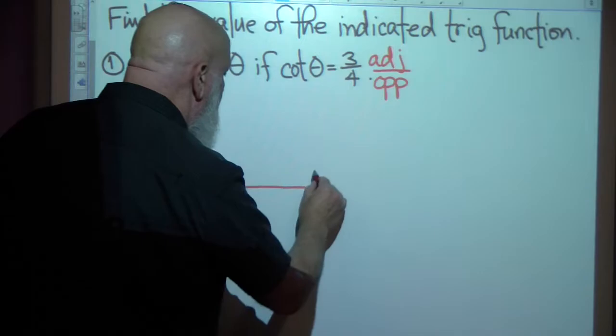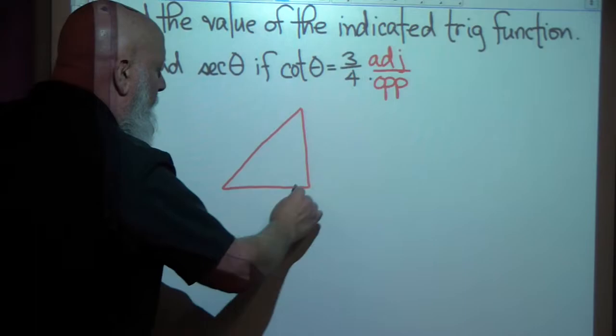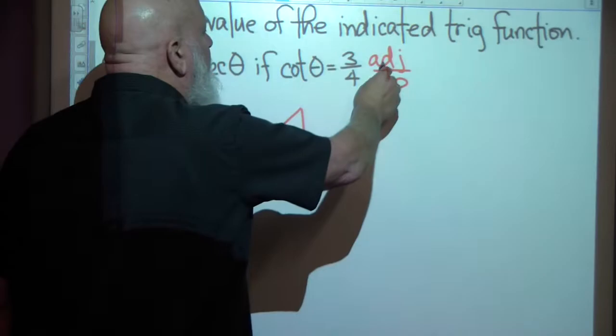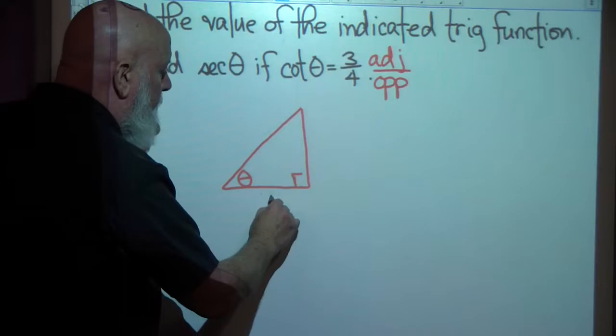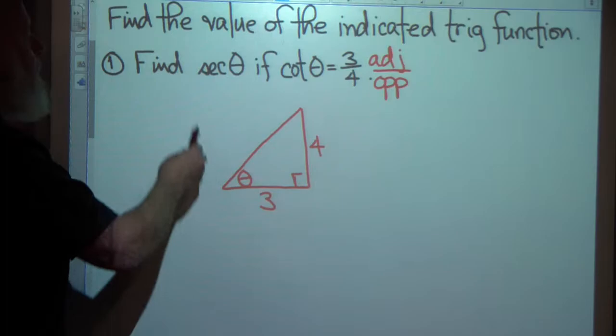I'm going to draw a right triangle. I'm not going to pay any attention to scale because the scale doesn't matter. I'm going to put my theta right here, and I'm going to say adjacent over opposite. Adjacent is right here — if I put my angle right here, adjacent would be 3. Opposite would be 4. And now I'm in a position to find the secant of theta.